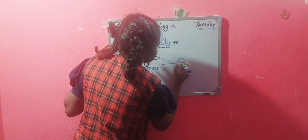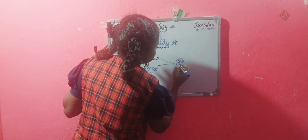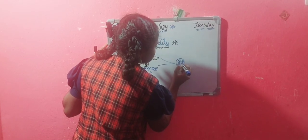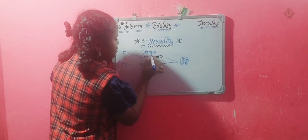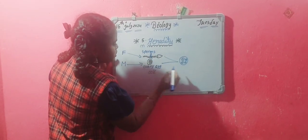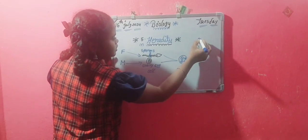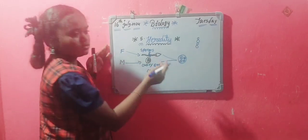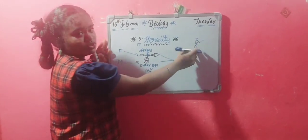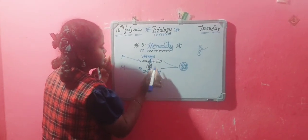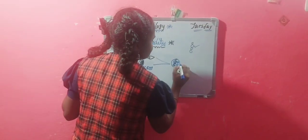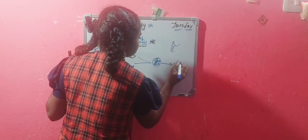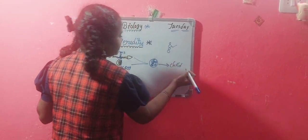They form a zygote. The structure of the zygote is this. Here, the father and mother release chromosomes into the zygote. The structure of chromosomes is a thread-like structure. This we call as chromosome structure. The mother and father both release chromosomes to the zygote. This result becomes the child.